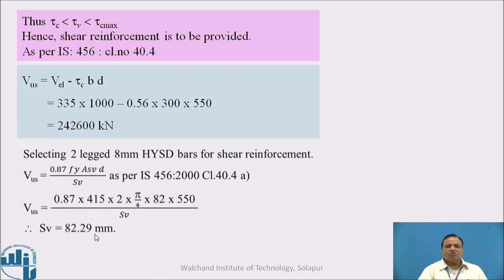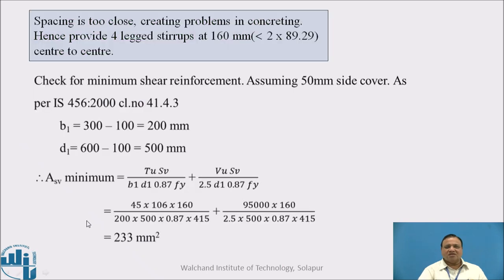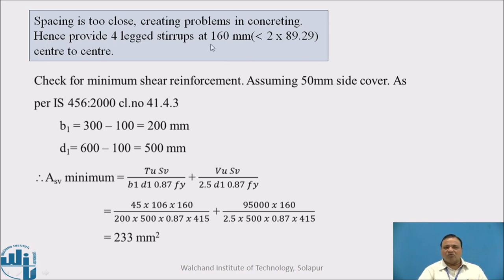This spacing of 82.29 mm is very small, which may create problems during concreting. Therefore, instead of two-legged stirrups, we provide four-legged stirrups. Four-legged stirrups allow the spacing to be doubled, giving 160 mm center to center.